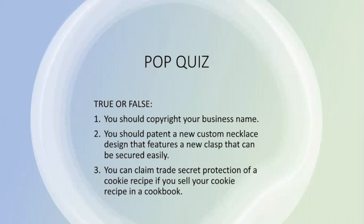For each question, please respond true or false. You should copyright your business name. False, because business names and logos are protectable by using trademarks and not copyrights. You should patent a new custom necklace design that features a new clasp that can be secured easily. True, this type of useful invention would be protectable using a utility patent. You can claim trade secret protection of a cookie recipe if you sell your cookie recipe in a cookbook. False, a trade secret cannot be commercially or publicly known beforehand. Selling the recipe would make it publicly known.